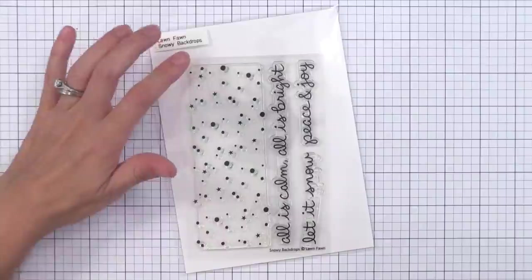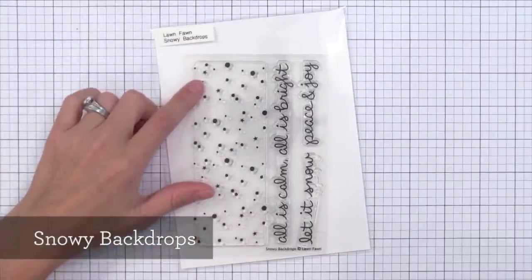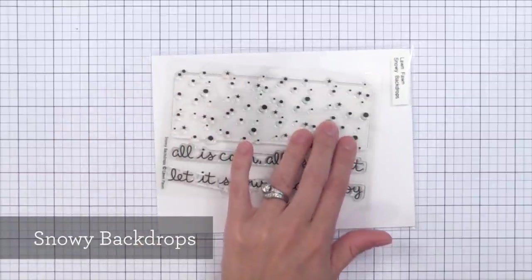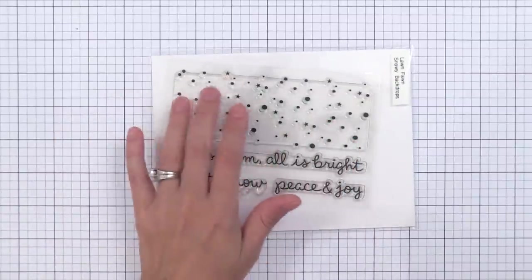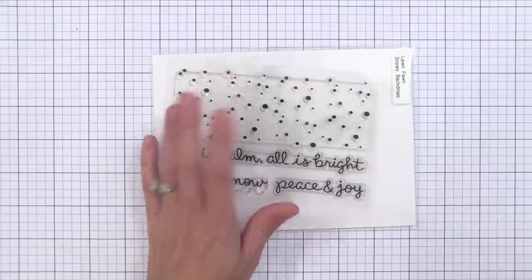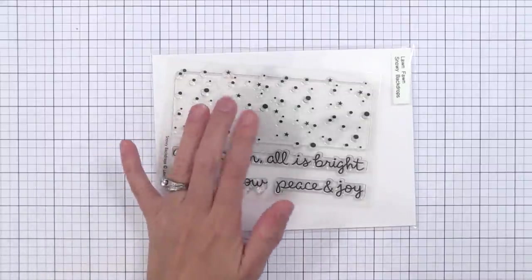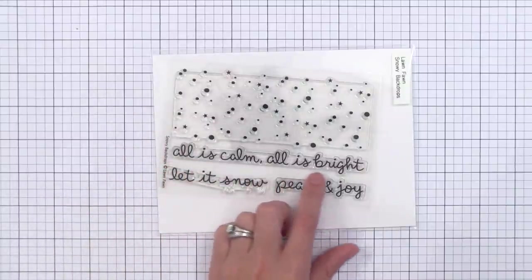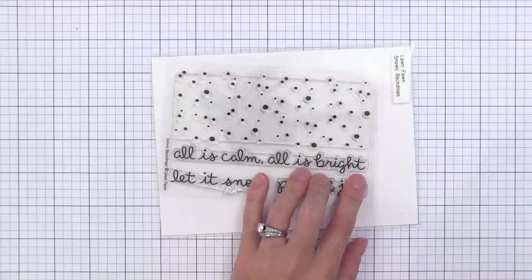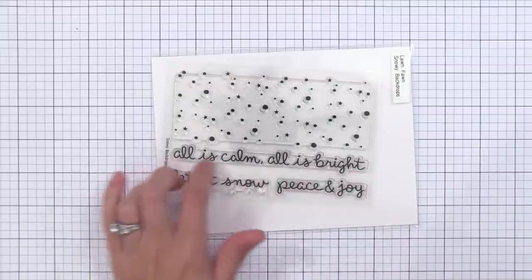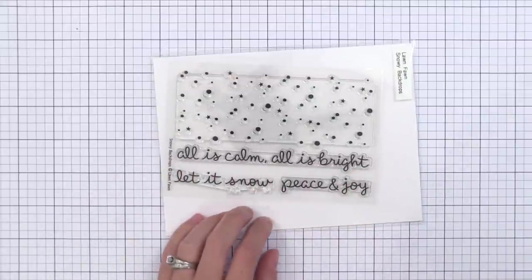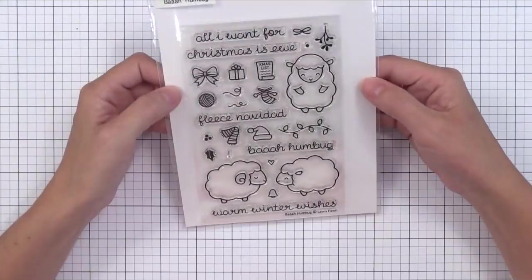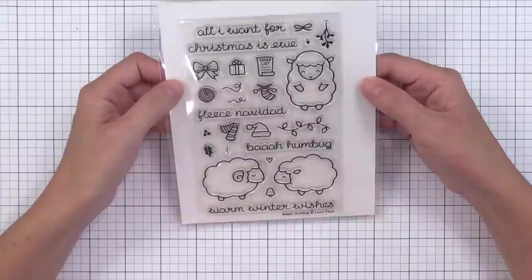I really like when Lawn Fawn offers backdrops. This snowy backdrop has little dots and stars mixed together and you can stamp it twice to cover a note card. I think it would be fun to stamp this in white pigment ink on a craft note card. Then stamp it again slightly offset with a colorful dye ink. The nice thing about this is it's clear so you can line it up to do that slightly offset stamping. I like that the sentiment 'all is calm, all is bright' is long so it fits across a card which I think it's always fun to have a sentiment that's long that way. And I just think that backdrop will go great with a lot of these stamp sets.